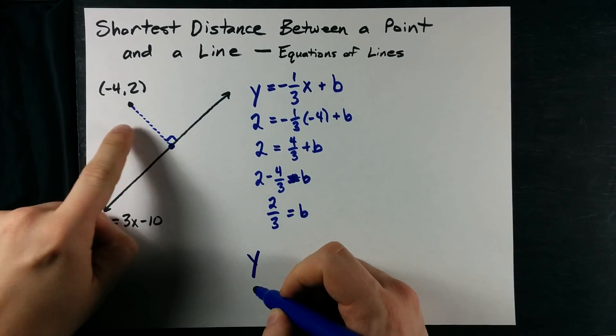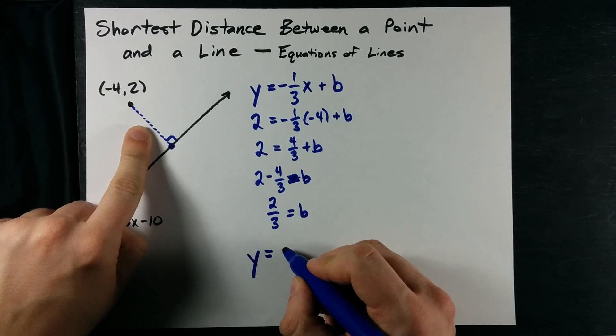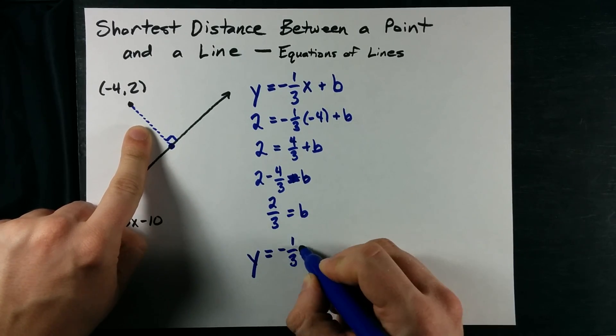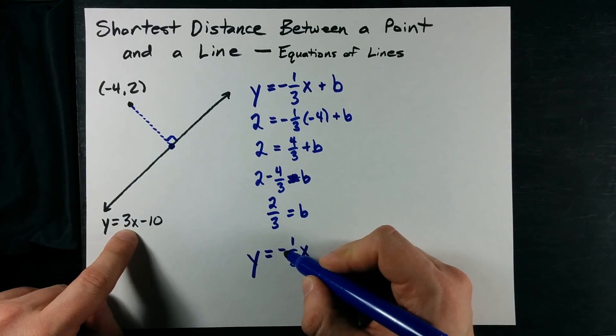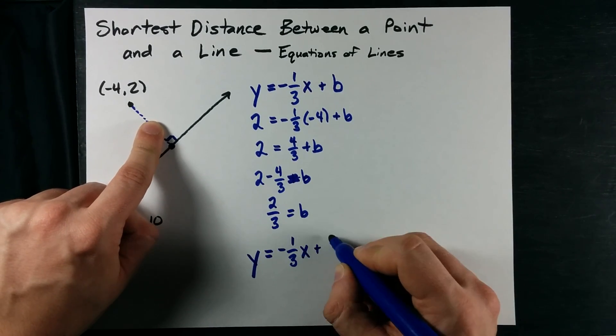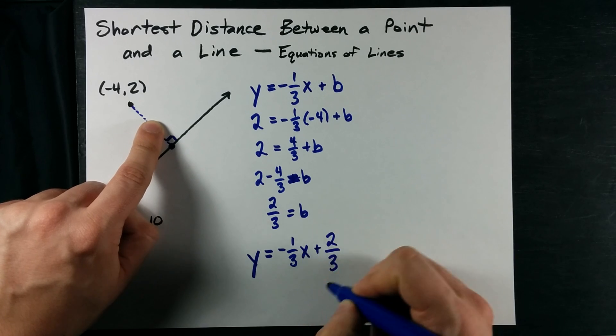Thus, the equation of the blue line segment is y equals negative 1 third x. That's the slope from the beginning, negative reciprocal of this one, plus whatever b you solved for.